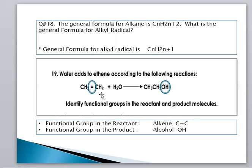In the reactant, the formula is CH2=CH2 — both carbons are double bonded. So in the reactant, we have the functional group of a carbon-carbon double bond (alkene). And in the product, we have methyl alcohol where the OH group is considered an alcoholic group.